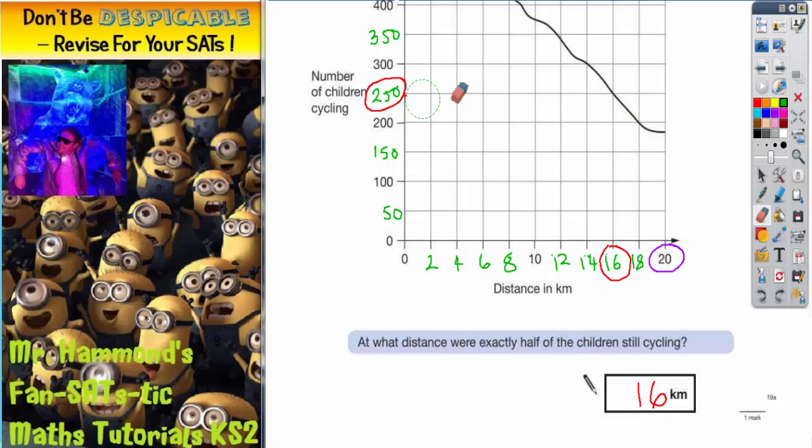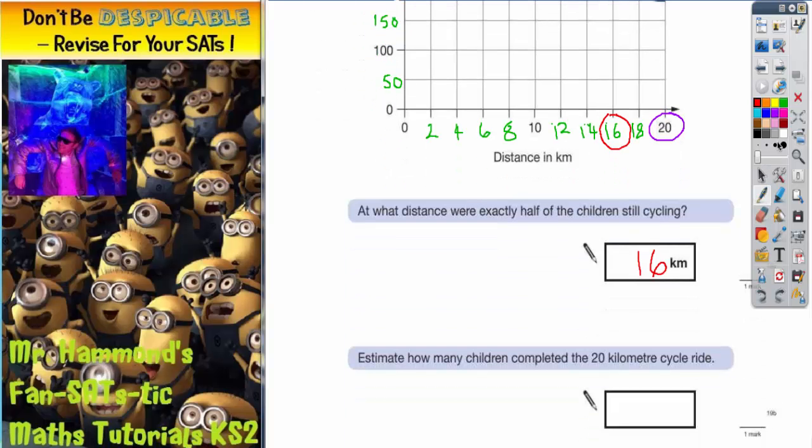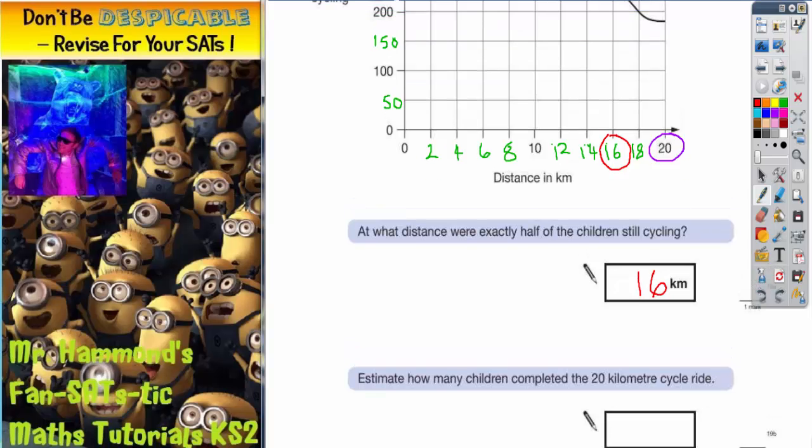Let's scroll down and look at the next part of the question. So the next part of the question says, estimate how many children completed the 20 kilometers cycle ride. So if they completed it, they need to have done the whole 20 kilometers. So let's look at the graph again.